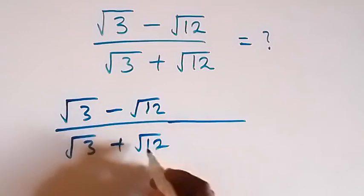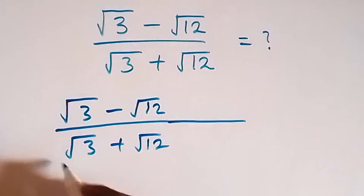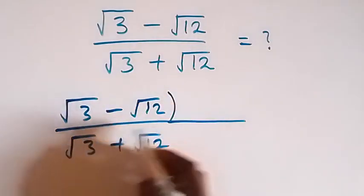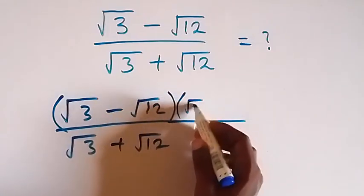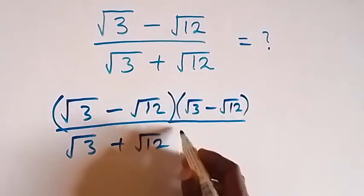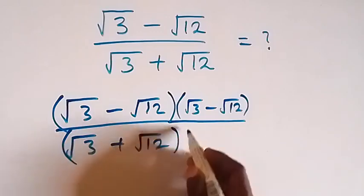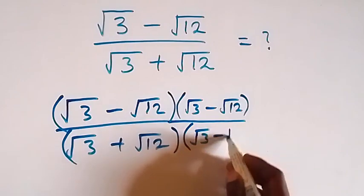From this method we rationalize by multiplying and dividing with the conjugate of the denominator. So here we multiply by √3 minus √12, which is the conjugate. Here also we multiply by √3 minus √12.